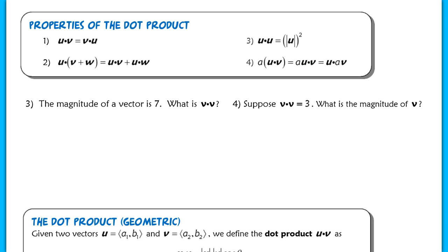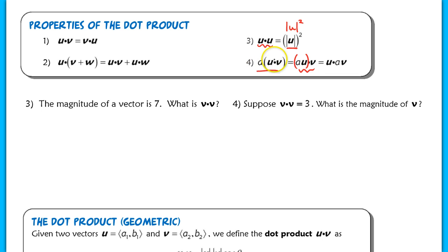Here are some useful properties of the dot product. First, the dot product is commutative: u·v = v·u. Second, the dot product distributes over addition. Third, if you take the dot product of a vector with itself — u·u — you get the length of u squared: u·u = |u|². Finally, the dot product is associative with scalar multiplication: c(u·v) = (cu)·v = u·(cv).